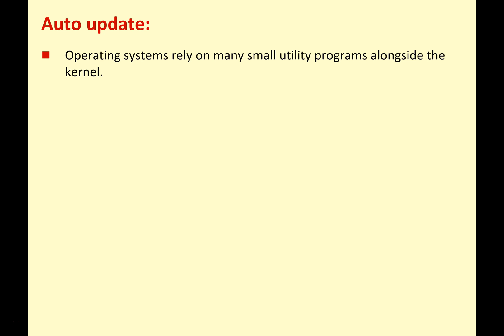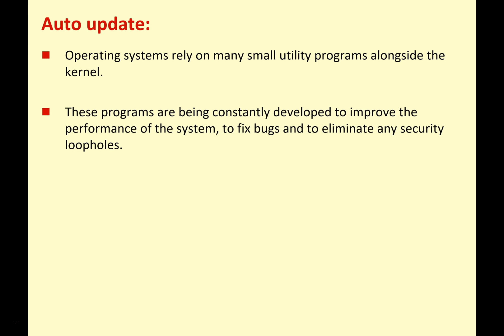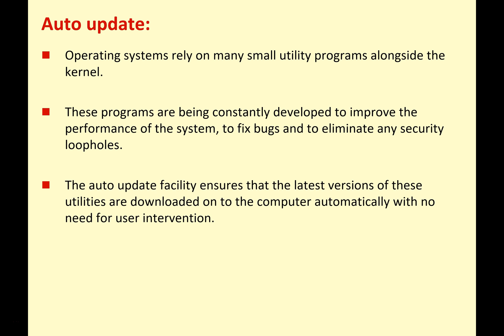Let's look at auto update, because this is a very important function. Operating systems rely on many small utility programs alongside the OS kernel. These programs are constantly being developed to improve performance, fix bugs, and eliminate security loopholes. The auto update facility ensures that the latest versions of these utilities are downloaded automatically with no need for user intervention, keeping everything up to date, meaning fewer problems and a faster system.